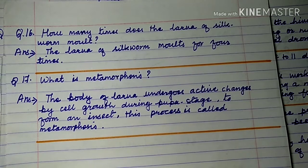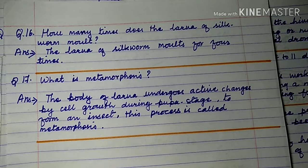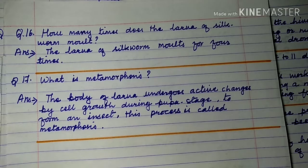Question number 16: How many times does the larva of silkworm molt? The larva of silkworm molts, meaning it sheds its skin, four times.